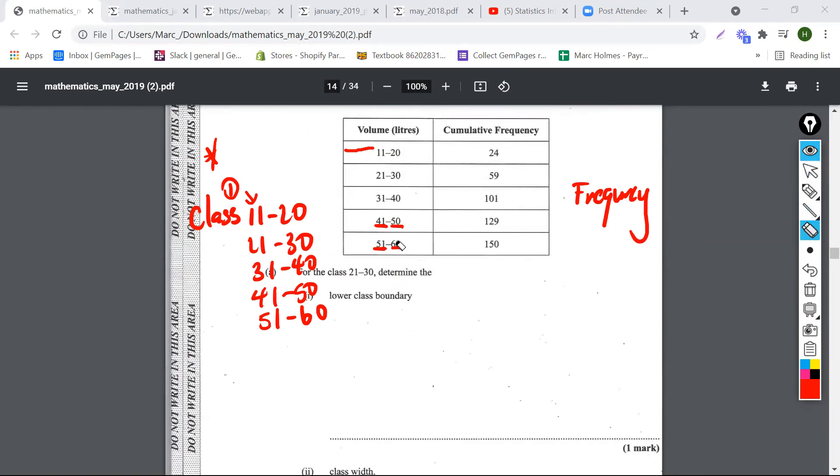I'll use 11 minus 21, for example. To find the class width, all I need to do is subtract one of these from the one in front of it. So 21 minus 11 would give me 10.